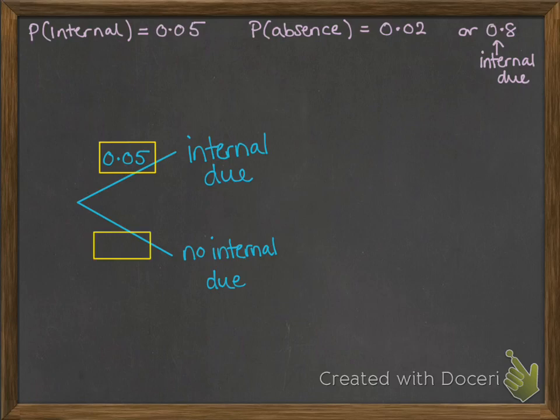In this box here we need to put whatever would make that add up to 1 because we know that probabilities always have to add up to 1. So either he has an internal due or he doesn't. That's all of the possibilities. So this answer is going to have to be 0.95.